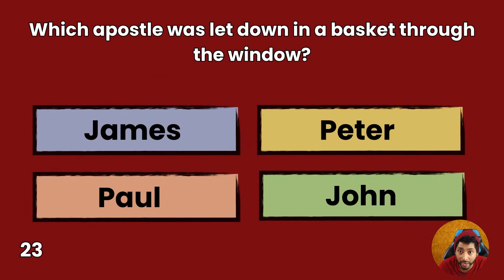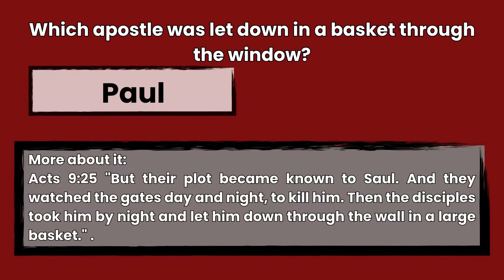Question 23: Which apostle was let down in a basket through the window? James, Peter, Paul, or John? Answer: Paul. Acts 9:25 — But their plot became known to Saul, and they watched the gates day and night to kill him. Then the disciples took him by night and let him down through the wall in a large basket.